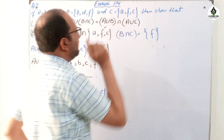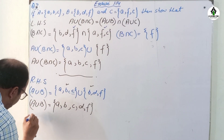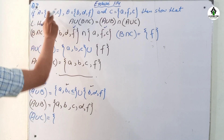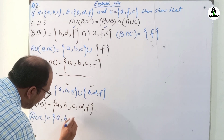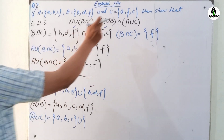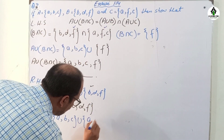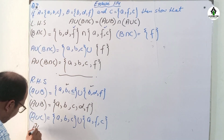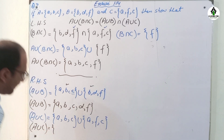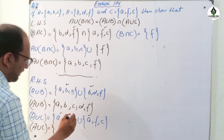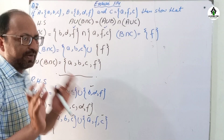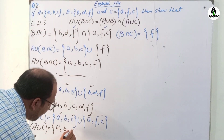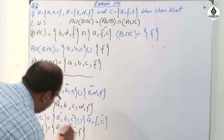Next, we find A union C. Set A = {A, B, C} and set C = {A, F, C}. In union, we write all elements and repeated elements only once. A and C are common to both sets, so we write them once each. Therefore, A union C = {A, B, C, F}.